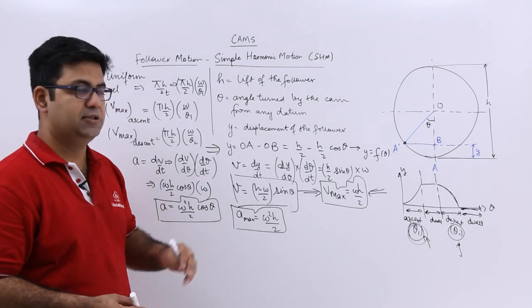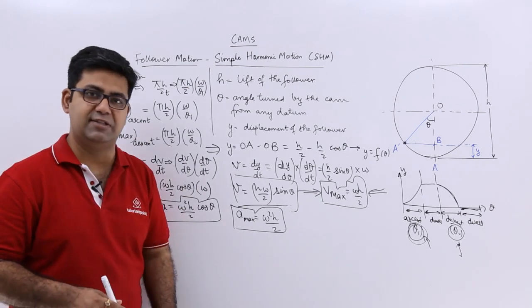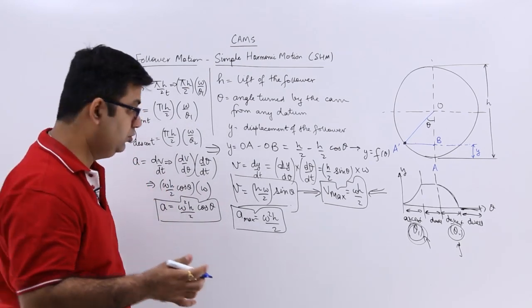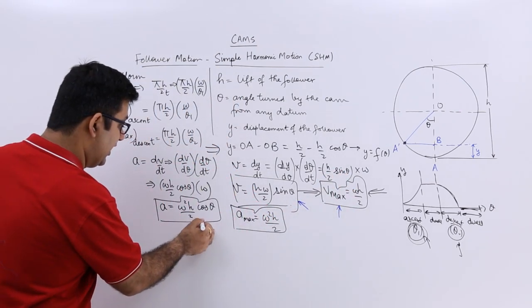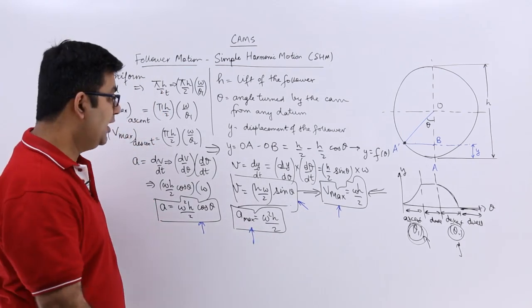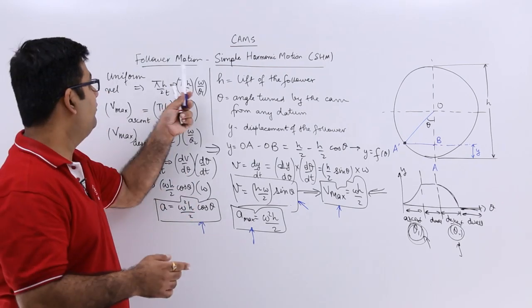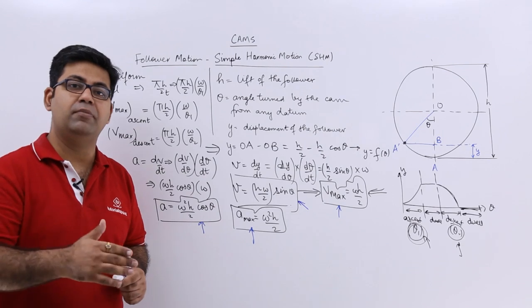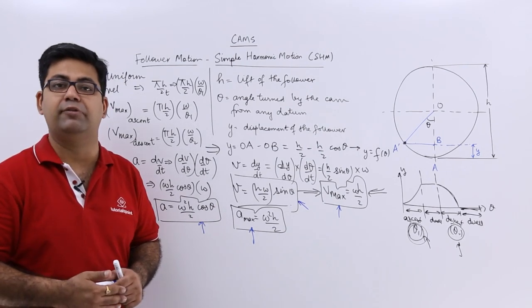So I hope you have understood this motion analysis of the follower when it is having SHM. The four formulas to note down are: displacement y, maximum velocity, acceleration, and maximum acceleration. Now let us move on to the next kind of follower motion, in which the follower will have motion in uniform acceleration and uniform deceleration.